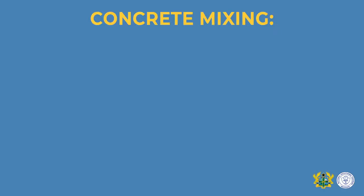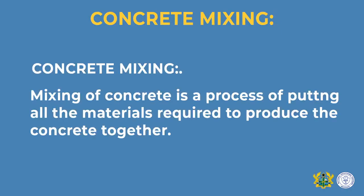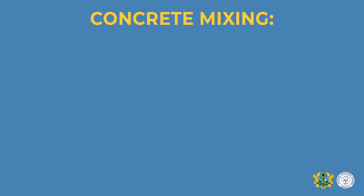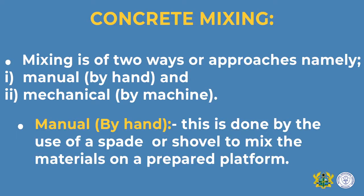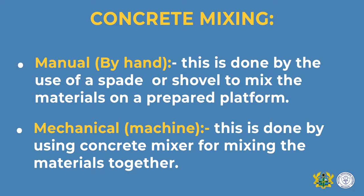After batching, the next process is concrete mixing — putting all the materials together in the mixer. There are two ways of mixing concrete: by hand or by machine. In hand mixing, a spade and shovel are used and the materials are mixed on a prepared platform. In machine mixing, a concrete mixer is used.